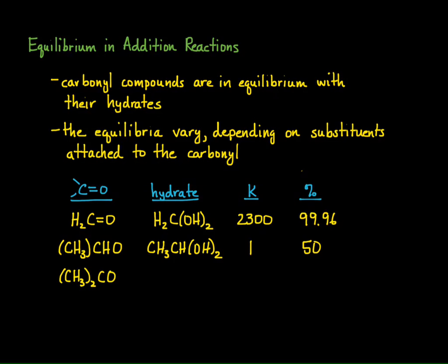CH3C double bond O, CH3. So propanone, acetone. And the hydrate of acetone looks like this. Two methyl groups on a carbon and two OH groups on the carbon. The equilibrium constant for acetone is 0.002.